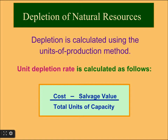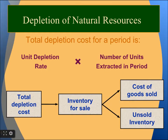Depletion of natural resources is calculated using the units of production method. The unit depletion rate equals cost minus salvage value divided by total units of capacity. Total depletion cost for a period equals the unit depletion rate multiplied by the number of units extracted. This total depletion cost — also called inventory for sale — consists of cost of goods sold and unsold inventory.